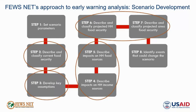We do this first at the household level, and then at the area level based on the population distribution of food security outcomes that we expect. Finally, we always identify any events that might change the most likely scenario, such as a change in crop production expectations based on a change in the rainfall forecast.